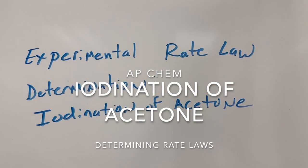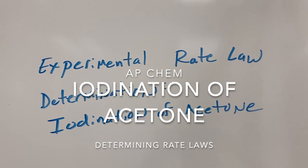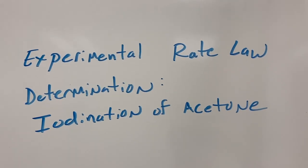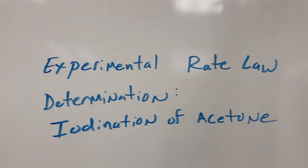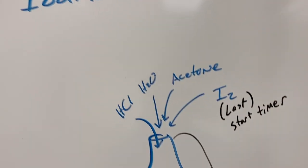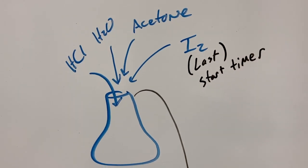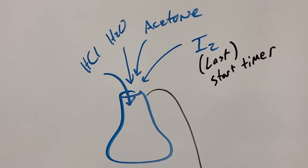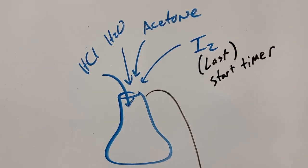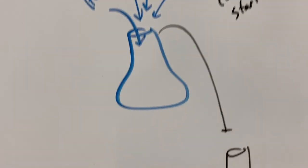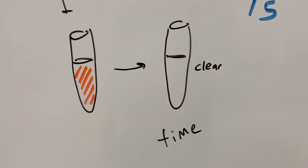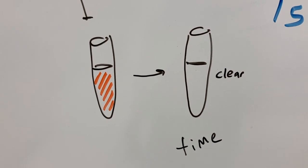Today's lab is going to be the experimental determination of the rate law for the iodination of acetone. We're going to be using the method of differential rates. Our setup will include hydrochloric acid (HCl), acetone, and iodine. We'll mix these all in a flask. Upon adding the iodine, we're going to see a color change, and as soon as the iodine is added, we start the timer and see how long it takes for that to clear up, and we record the times.